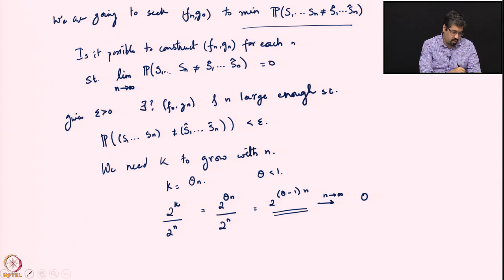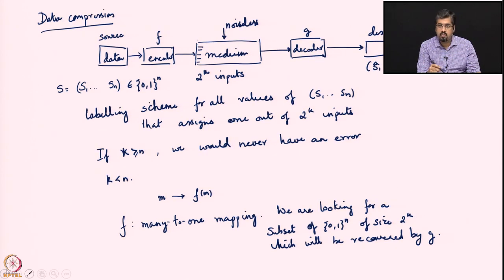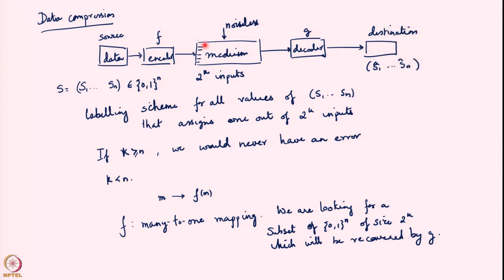In the data compression setting, the medium could only accommodate 2^k possible inputs. This necessarily meant that only 2^k possible values of the source could be recovered at the decoder, because the decoder can only see 2^k possible outputs and must map each of those to one of the possible source values. So only 2^k could potentially be recovered.